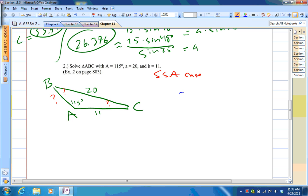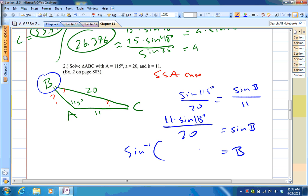But, if I work this out, the sine 115 degrees over 20, let's say I want to find angle B first. So, sine B over 11. So, sine B will equal 11 times sine 115 degrees divided by 20. So, B will equal the inverse sine of all that. So, inverse sine of 11 times sine 115 divided by 20. I should get 29.899 degrees.